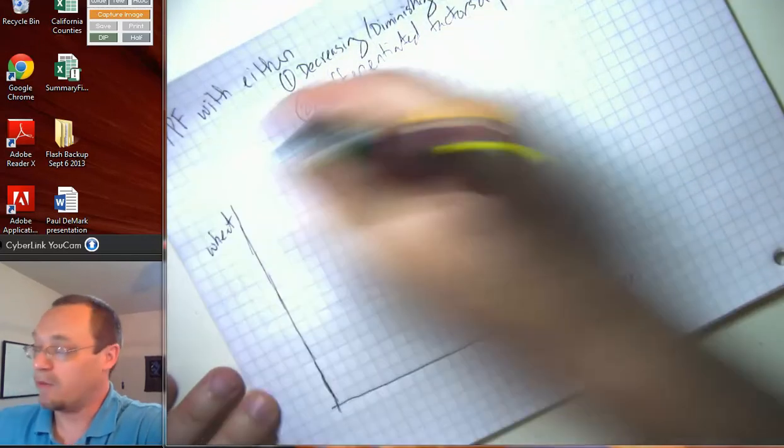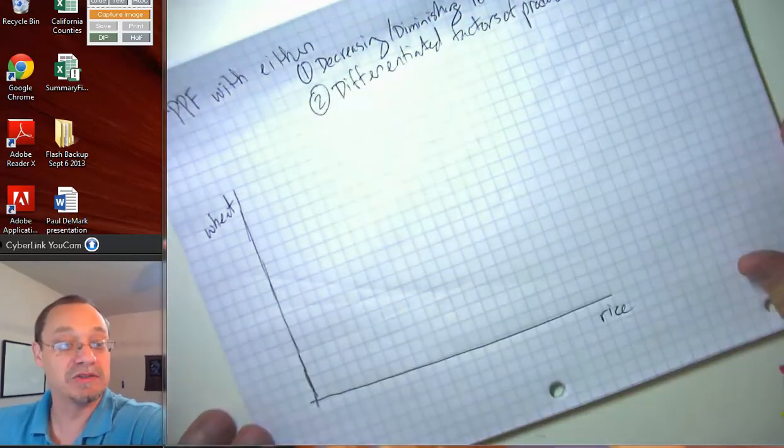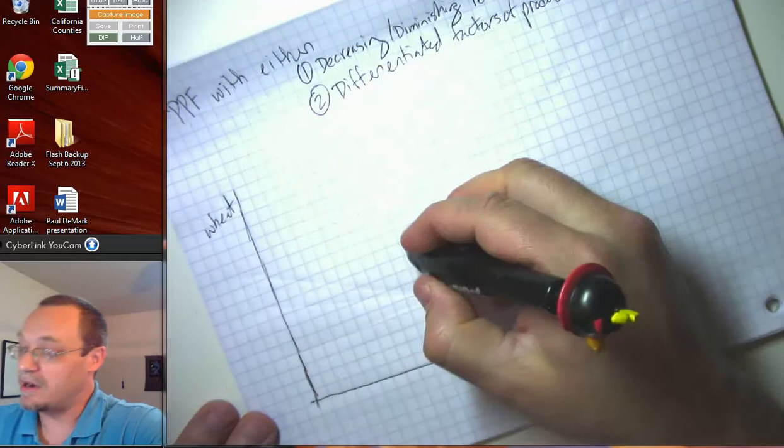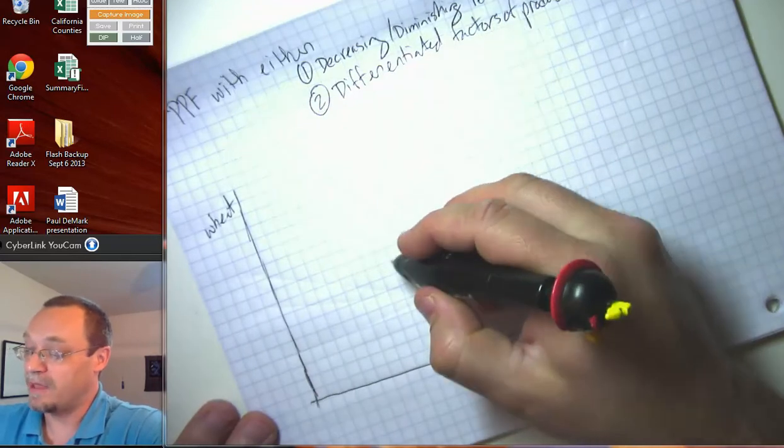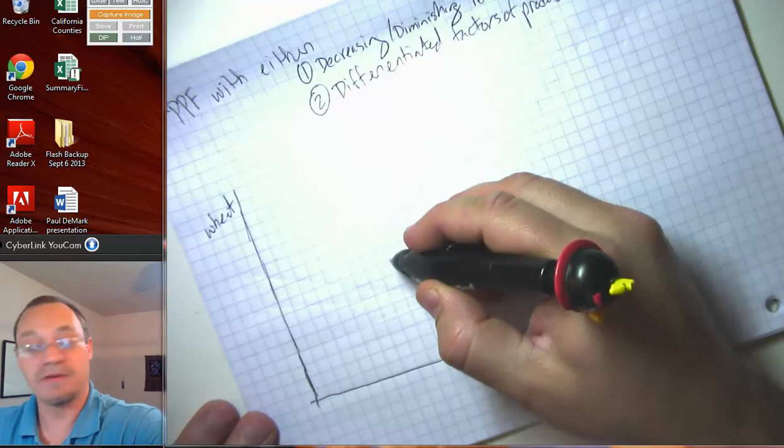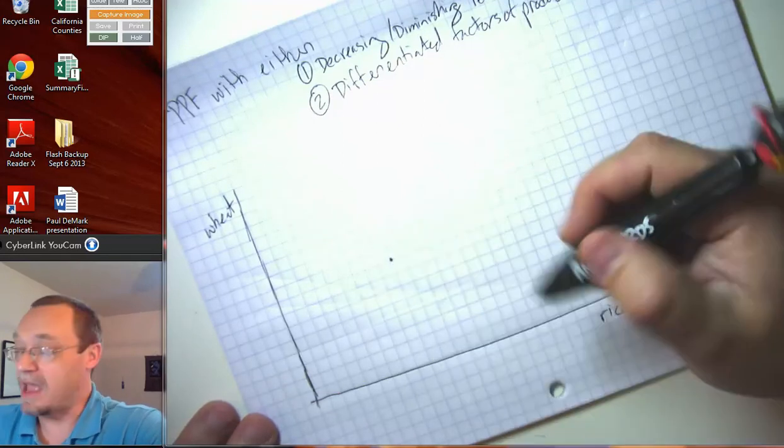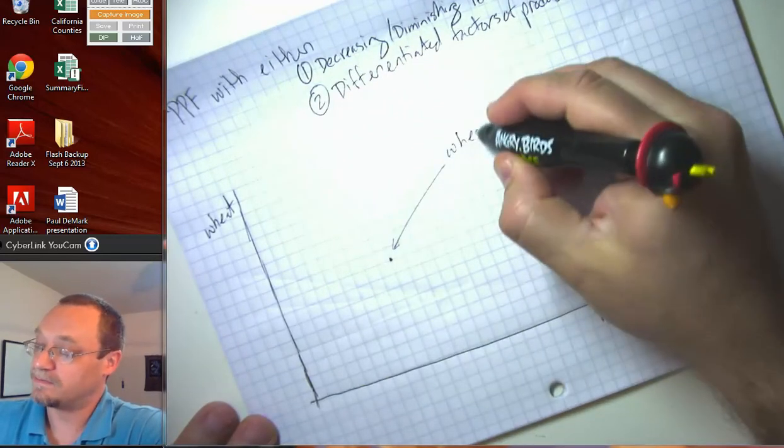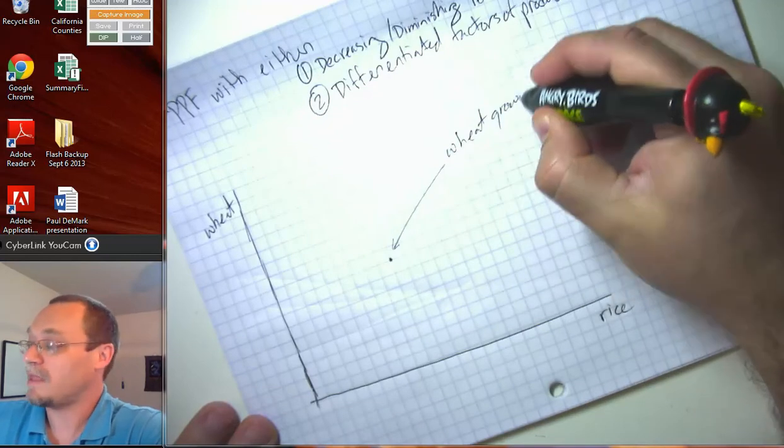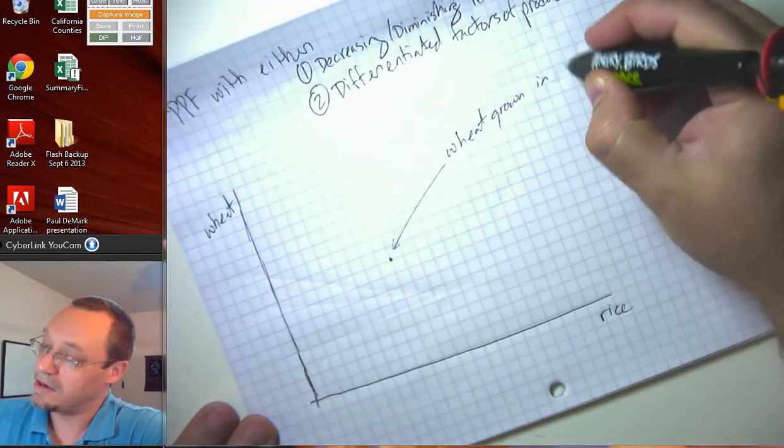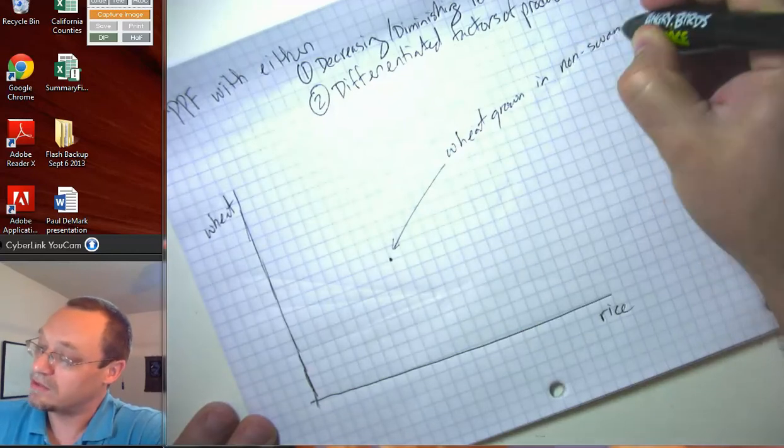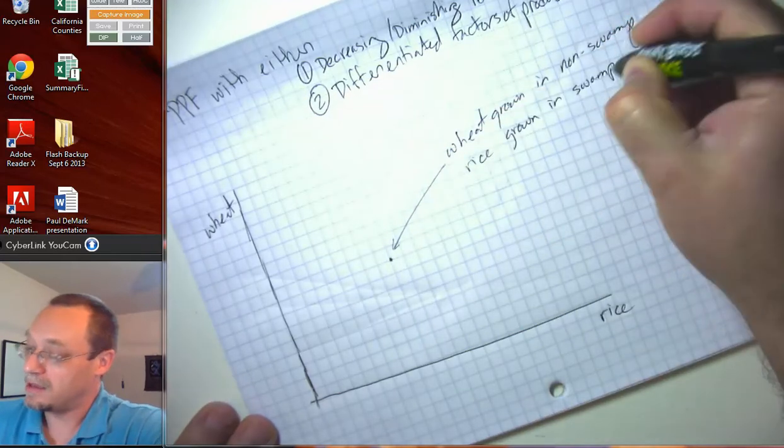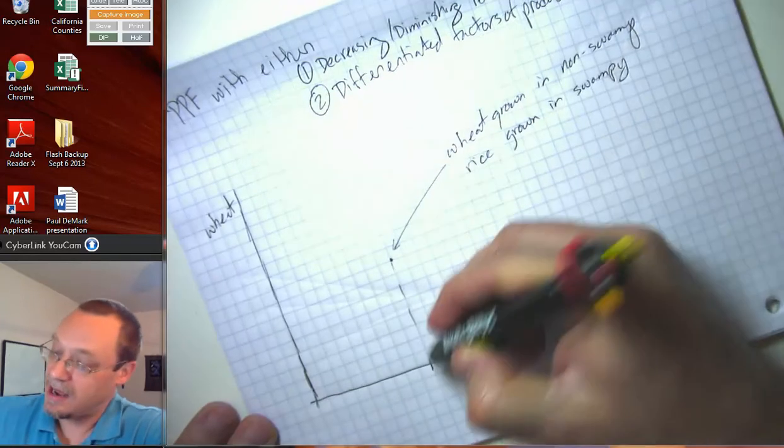And as you may or may not know, rice likes swampy areas and wheat does not like swampy areas. So let's suppose that if China divides up its land reasonably and assigns wheat growing to the non-swampy areas and the rice to the swampy areas, wheat grown in non-swampy, rice grown in swampy, it can grow this much rice and that much wheat.